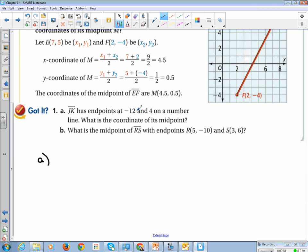JK has endpoints at negative 12 and 4 on the number line. So here's my wonky number line for the candidate case out.